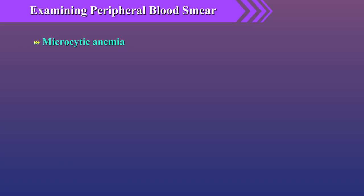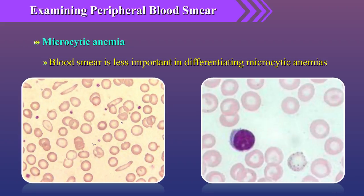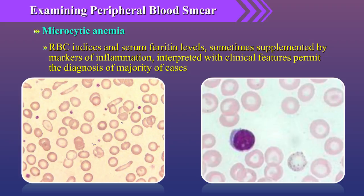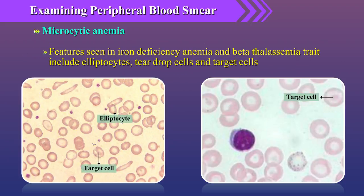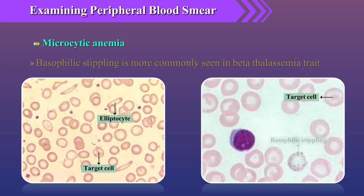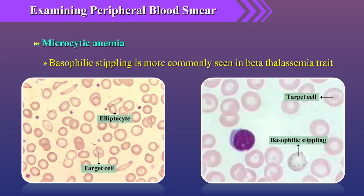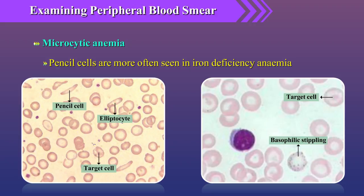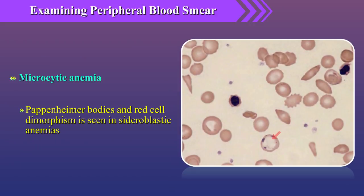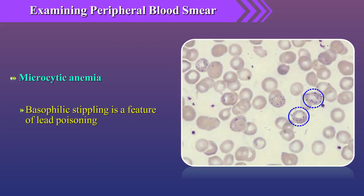In microcytic anemias, the blood smear is generally less important in differentiation since RBC indices and serum ferritin levels, sometimes supplemented by markers of inflammation, interpreted with clinical features permit diagnosis in the majority of cases. Features seen in both iron deficiency anemia and beta thalassemia trait include elliptocytes, teardrop cells, and target cells. Basophilic stippling is more commonly seen in beta thalassemia trait, while pencil cells are more often seen in iron deficiency anemia. Pappenheimer bodies and red cell dimorphism are seen in sideroblastic anemias, and basophilic stippling is a feature of lead poisoning.